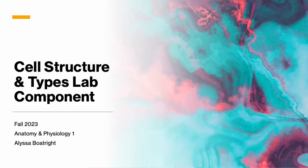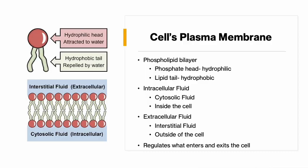This is going to be cell structure and types. We talked about the function of cells in lecture last week, so we're going to talk about the structure of the cells and where the parts actually are inside of the cell. Most of this should sound familiar because we talked about the function of pretty much everything we're going to go over today last week, but we're going to start with the cell's plasma membrane.